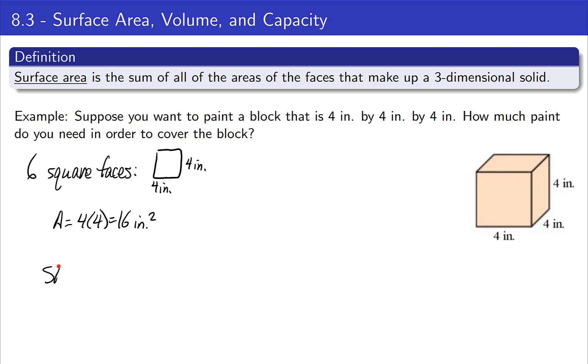Then the total surface area would simply be six times that 16, and give us 96 inches squared. We merely needed to multiply it by six because there are six identical faces.